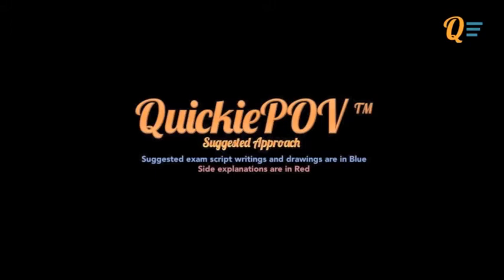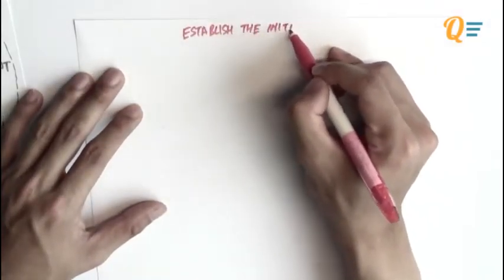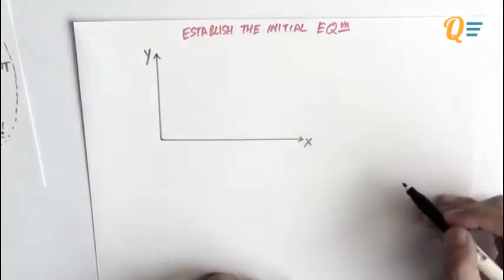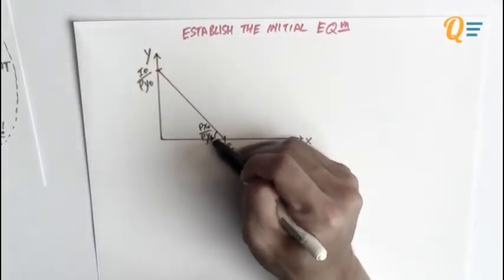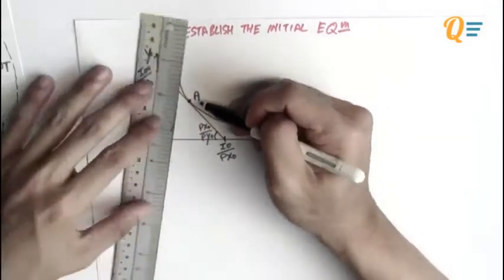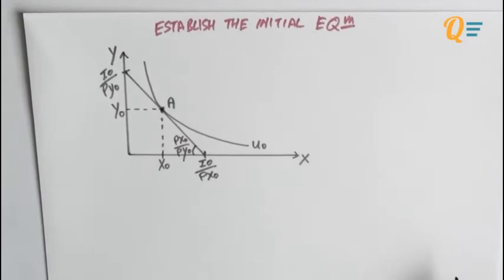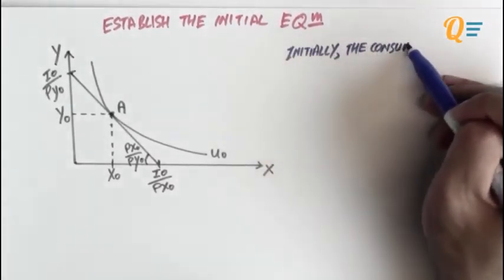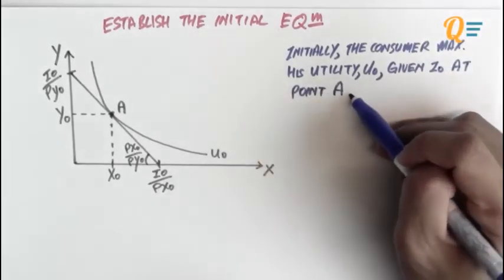All side explanations are going to be in red, and whatever I actually write in the exam is going to be in blue and other colors. The first thing we have to do is establish the initial equilibrium. I'm going to draw my budget constraint as well as my indifference curve to show the initial equilibrium. This consumer is initially at point A, consuming X0 as well as Y0. Initially, the consumer maximizes his utility U0 given a nominal income of I0 at point A, as shown in figure 1.